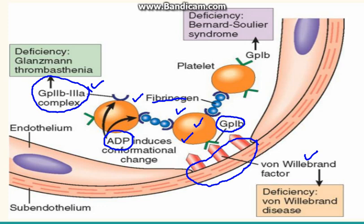Diseases associated with these components include: deficiency of glycoprotein IIb/IIIa, known as Glanzmann thrombasthenia; deficiency of glycoprotein Ib, known as Bernard-Soulier syndrome; and von Willebrand disease. All of these lead to bleeding and coagulation disorders.